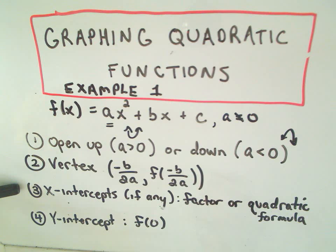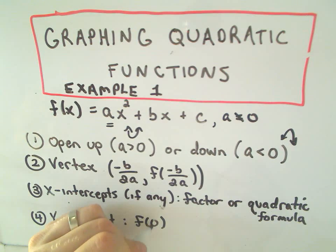To find x-intercepts, if there are any, I'll either factor. If it's not easy to factor, I'll just use the quadratic formula. And then to get the y-intercept, I simply plug zero into the function.